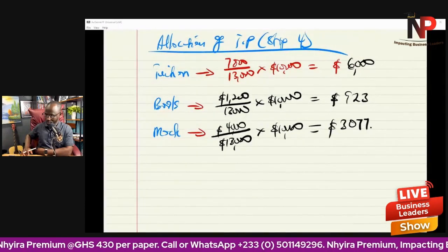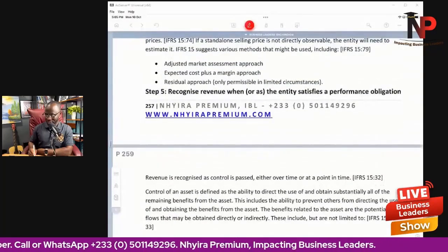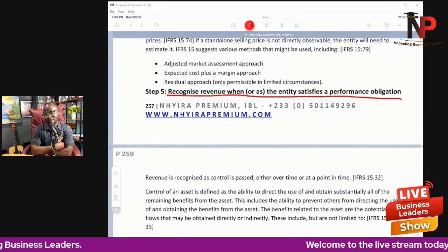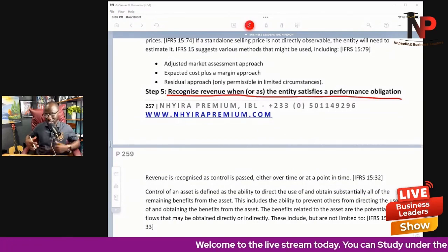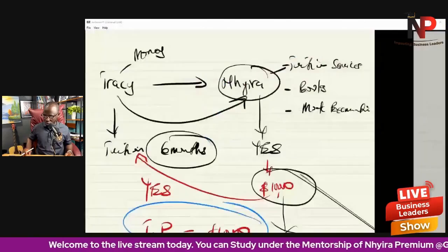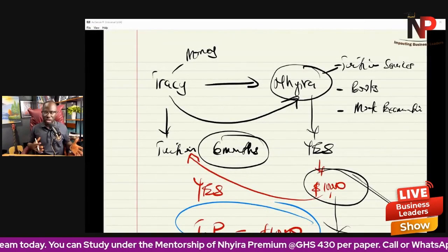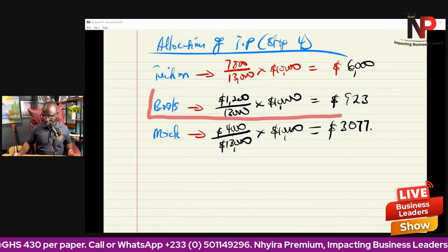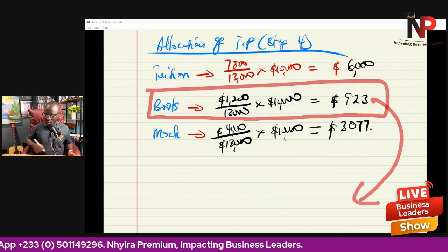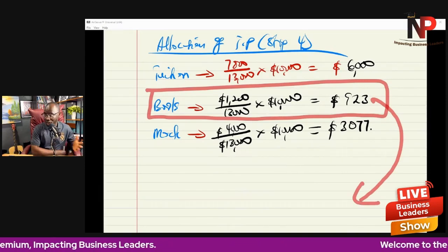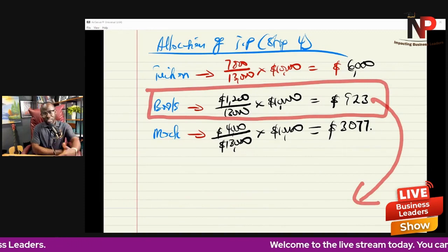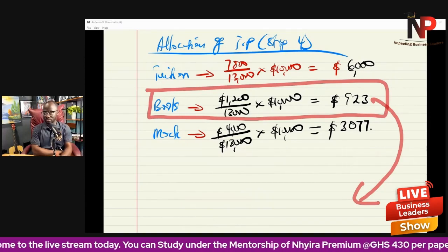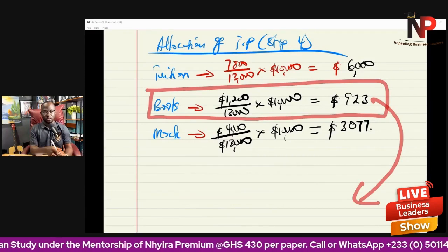Step five: recognize revenue when or as the entity satisfies each performance obligation. For example, if on the date the contract is signed Nshira transfers books to Tracy, the revenue recognized at that point is $923 — because that is the performance obligation satisfied at that date.